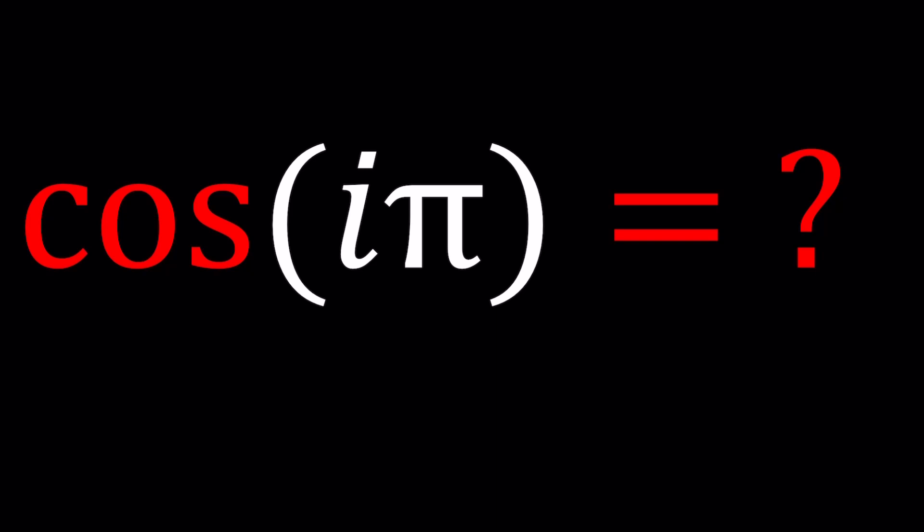This channel is all about complex numbers, and in this video, we're going to be evaluating cosine of i times pi. Do you think this is a complex number, an imaginary number, or a real number?